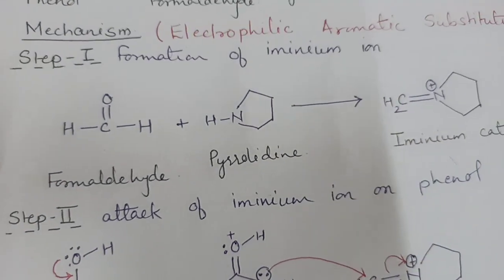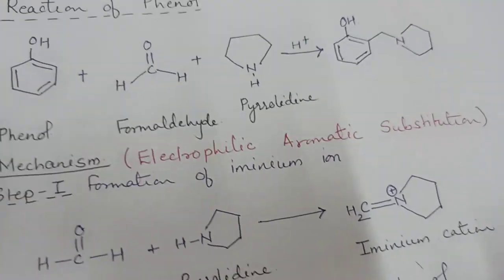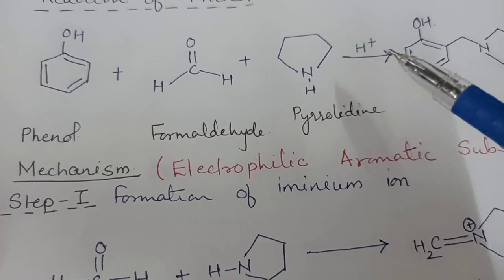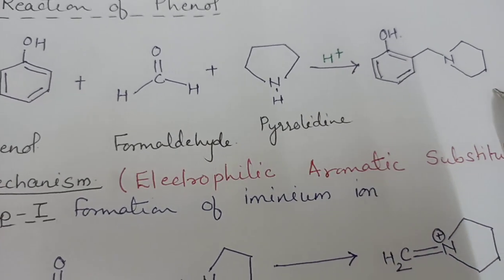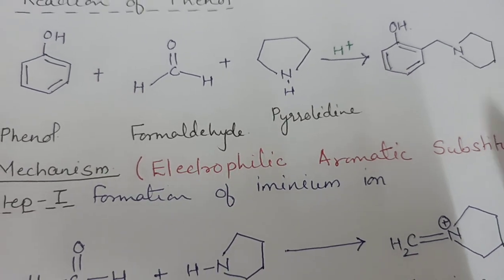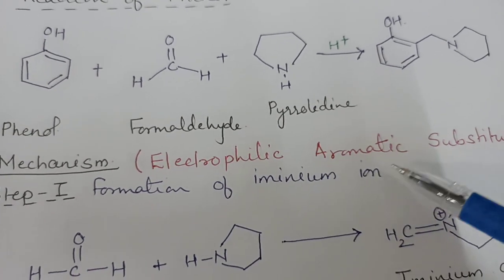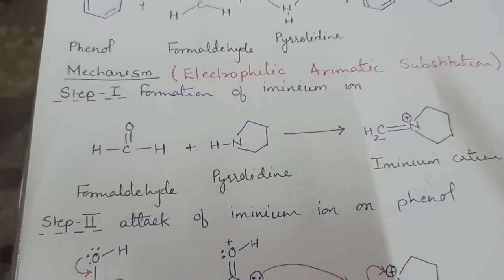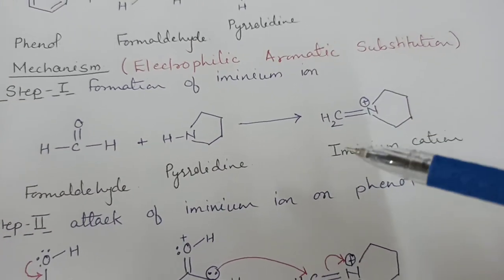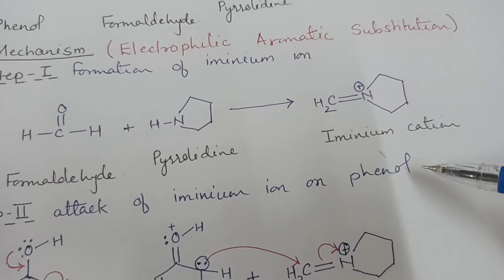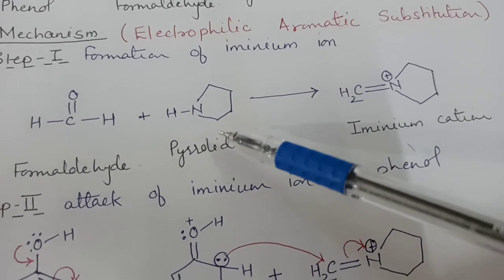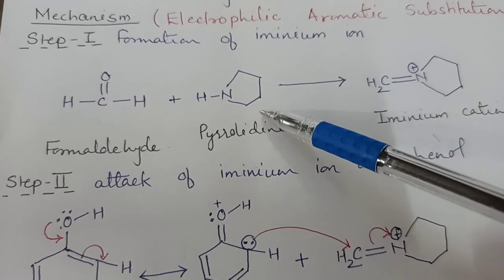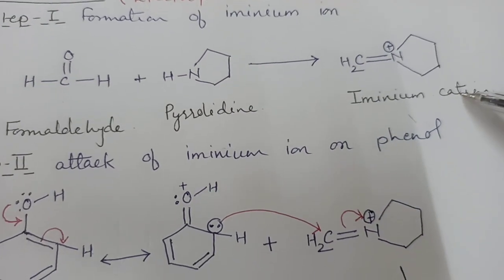Now the same reaction I am going to explain for phenols. Phenol can condense with formaldehyde and pyrrolidine to convert into the Mannich base. The mechanism of this reaction involves electrophilic aromatic substitution, since a hydrogen of the phenol is replaced by the iminium cation. The first step is the same: reaction of formaldehyde and pyrrolidine to form the iminium cation.